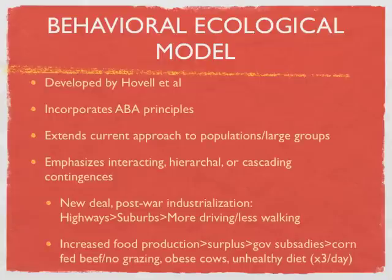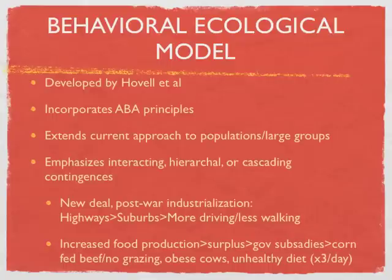A lot of what Hovel does in his behavioral ecological model is extend behavior modification constructs to a population or large group. Constructs like stimulus control, reinforcement, punishment, and similar strategies have historically been used almost at the individual level or with small groups. What Hovel does is argue that those are very valid strategies for changing behavior and so they can be applied at the community level.